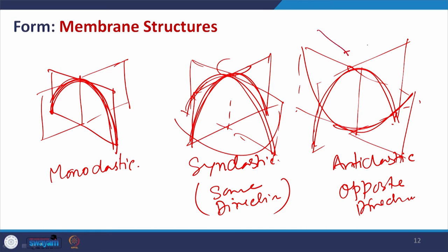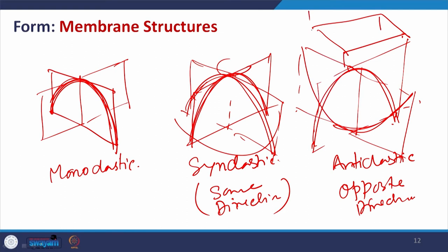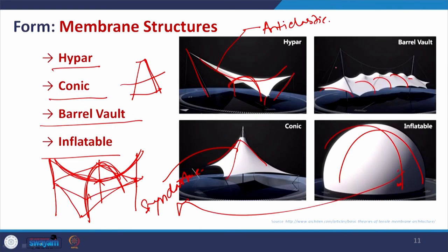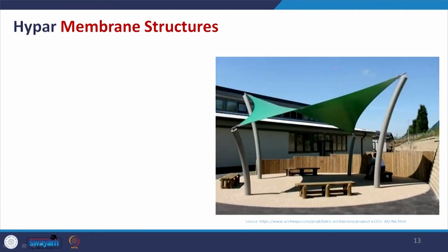If we take a piece of cloth, put some low-end support and some high-end support, and pin it up, we get the shape of the hyper. Moving to the example of hyper — you can understand why this curvature is created: you get a clear curvature in one direction and also in the other, they are in opposite directions because the heights and inclinations of the supports are different. If they were equal, they would give a plain surface.